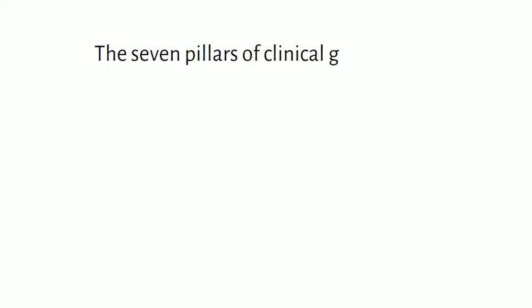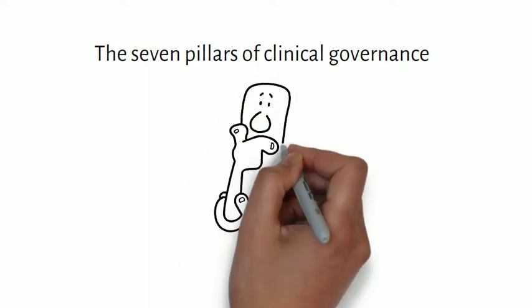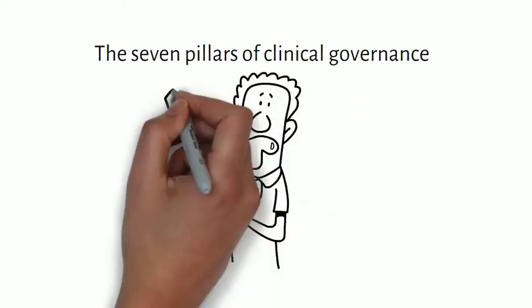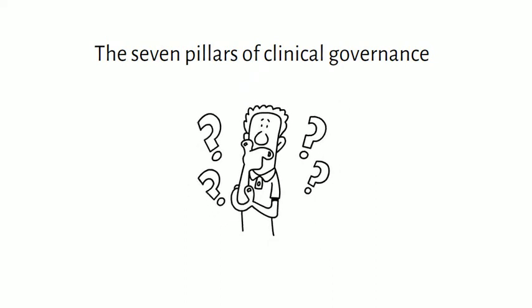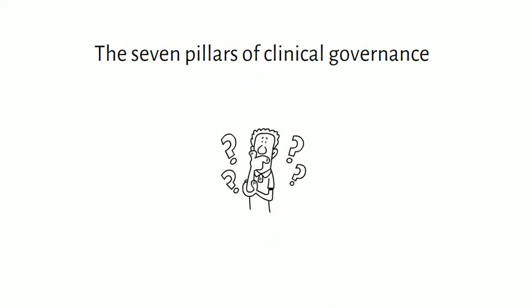Clinical governance is a structure or framework through which organizations are accountable for continuously improving the quality of their services and safeguarding high standards in the clinical environment. There are seven pillars of clinical governance, and each pillar represents an area of activity which is used to make sure we deliver the highest quality of healthcare to patients.